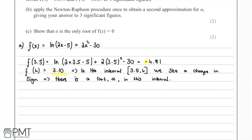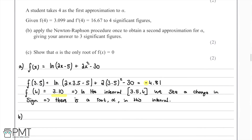Moving on to part B: a student takes 4 as the first approximation to the root α. We're given that f(4) = 3.099 and f'(4) = 16.67. We're asked to apply the Newton-Raphson procedure once to obtain a second approximation for α, giving our answer to three significant figures.